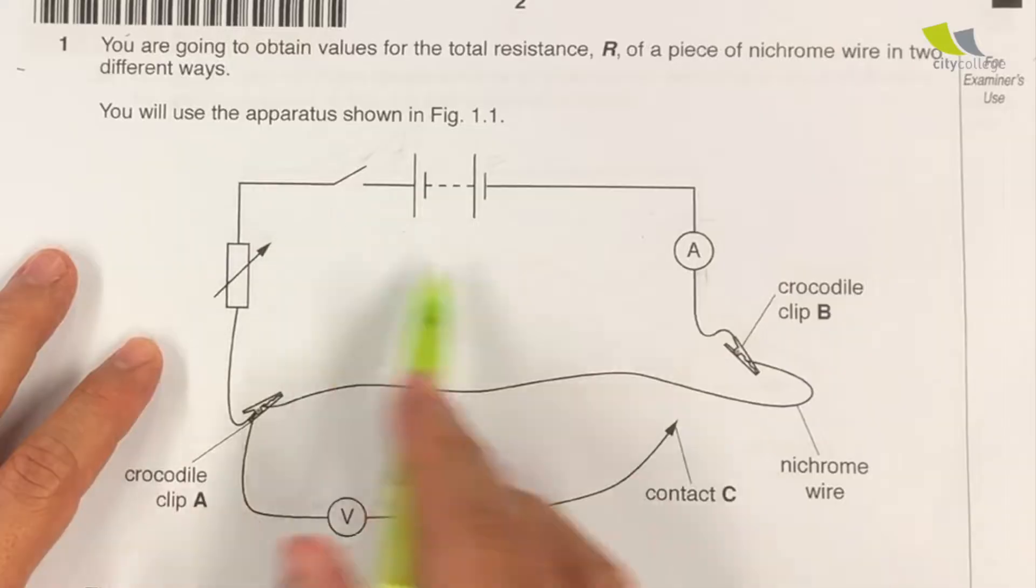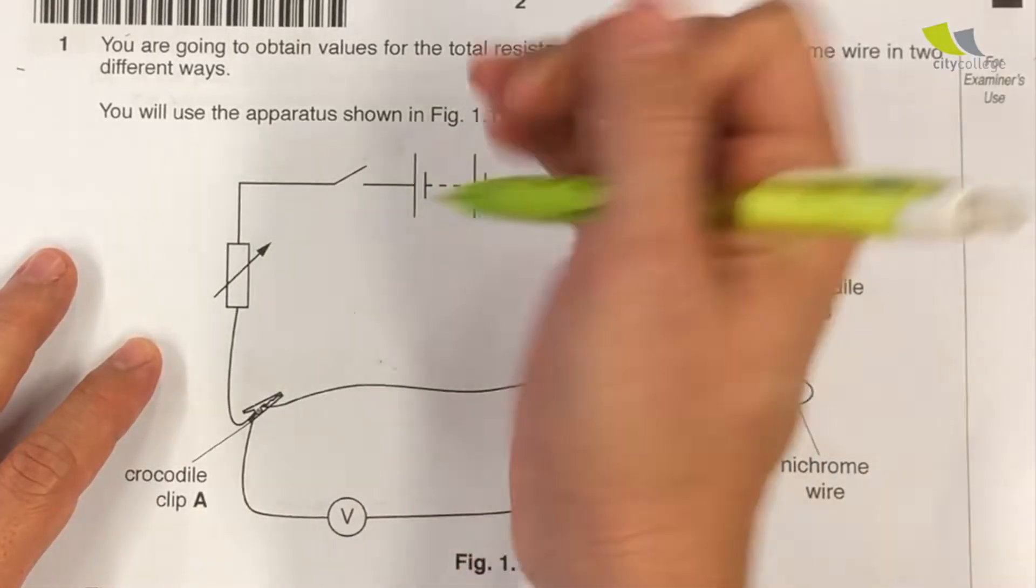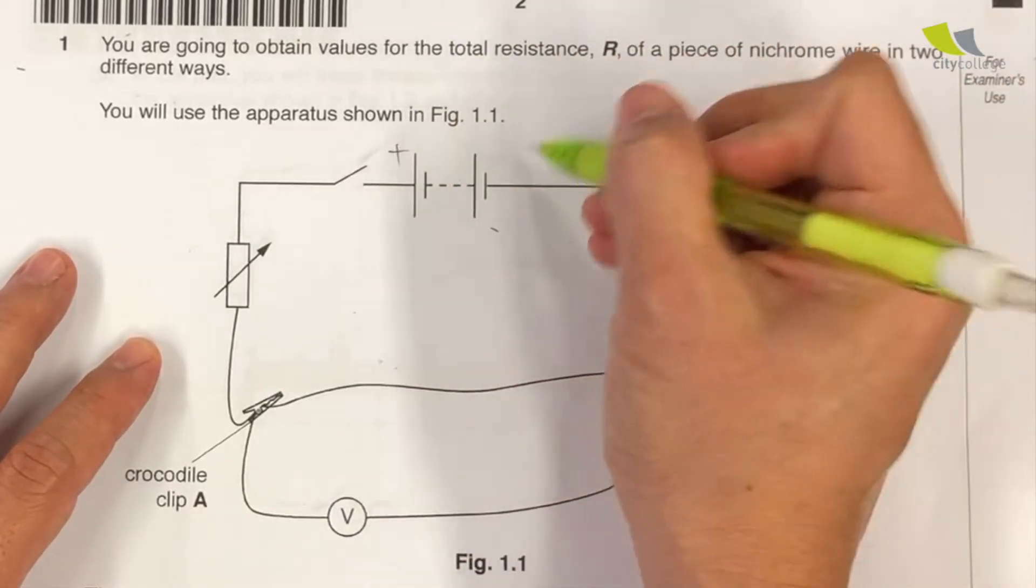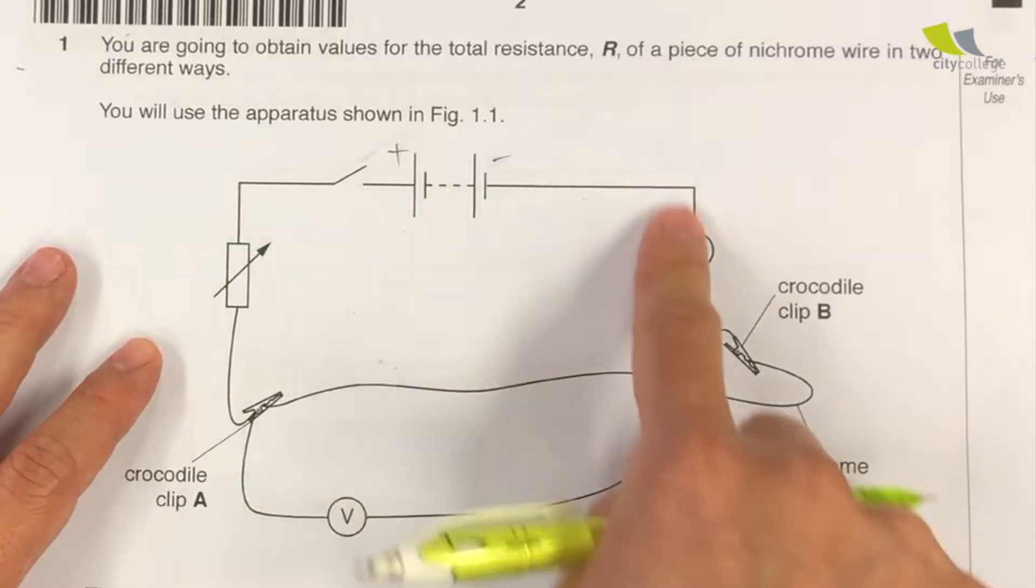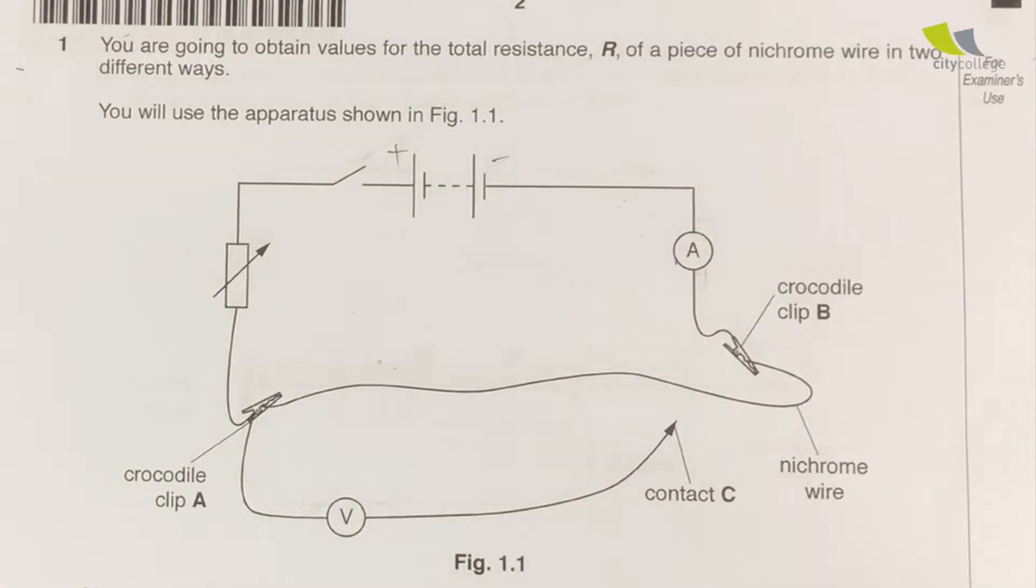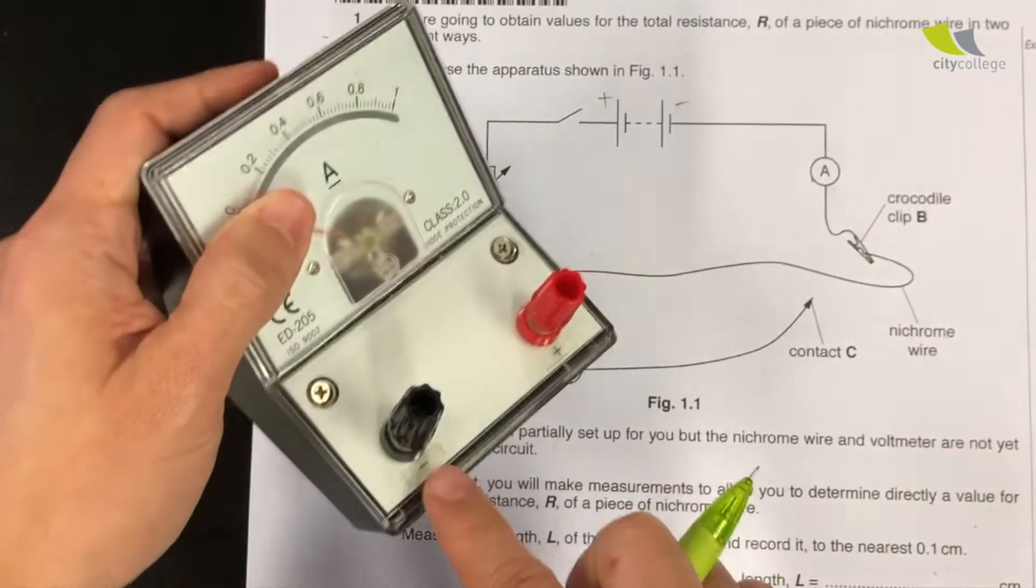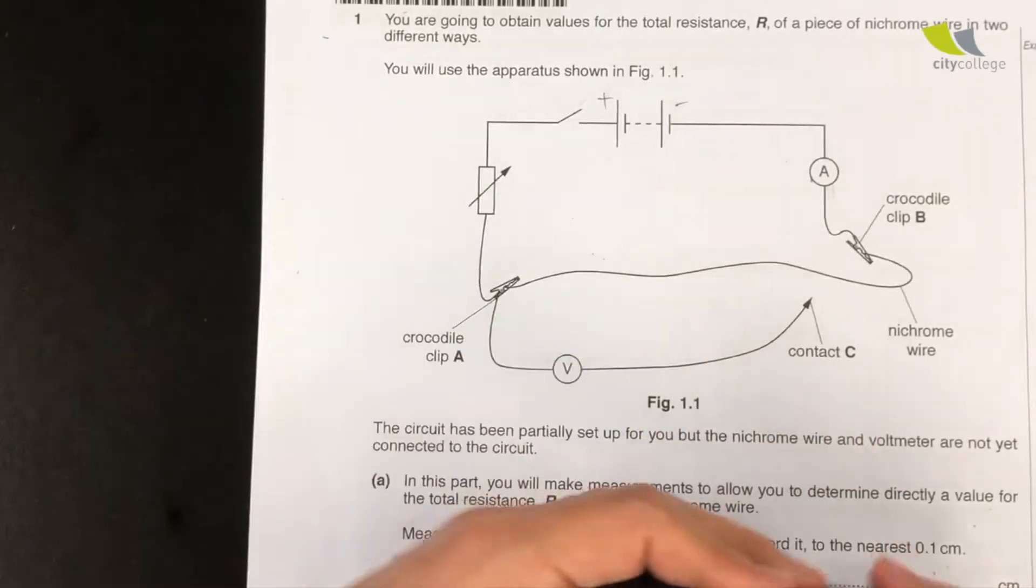First of all, from these symbols, you will know that this side of the battery is positive and this is negative. Okay, how do you connect to the ammeter? The ammeter also has negative and positive signs.